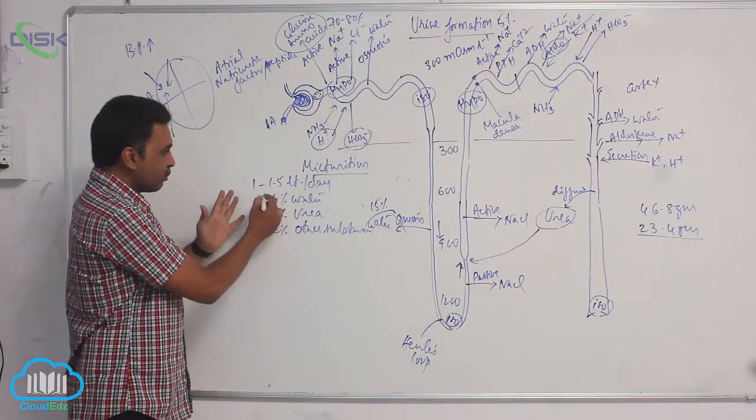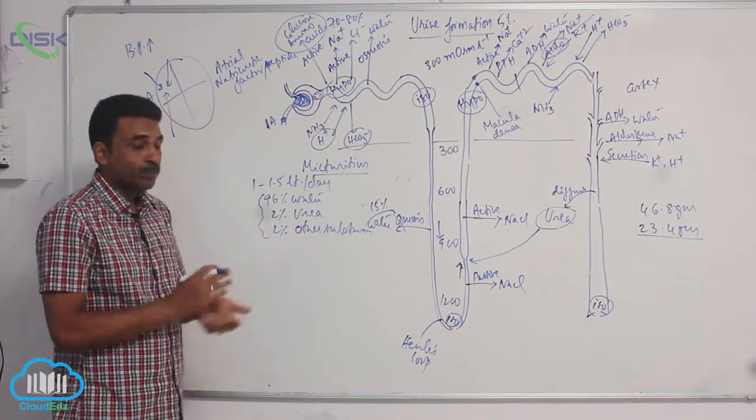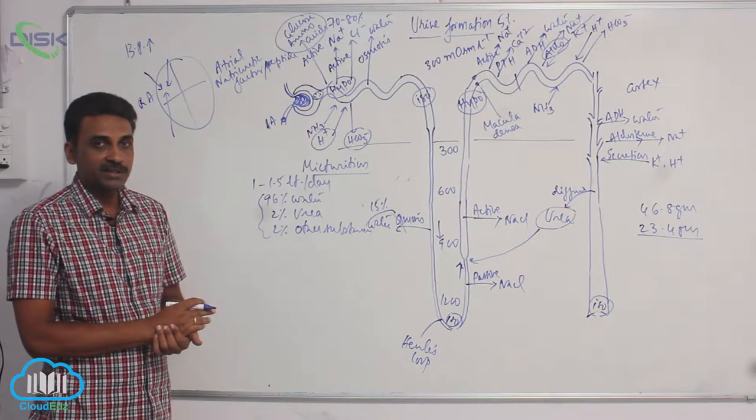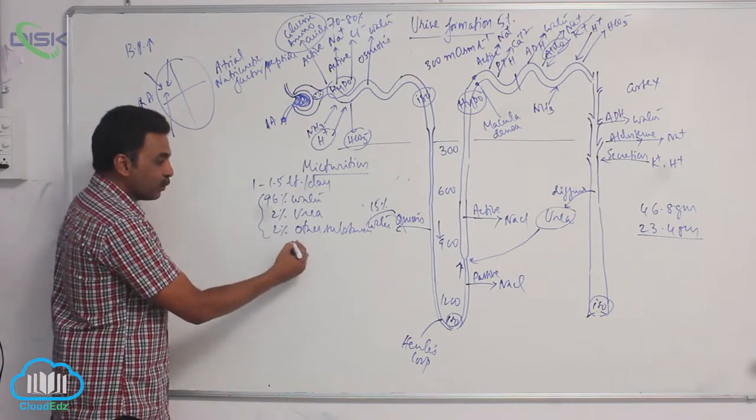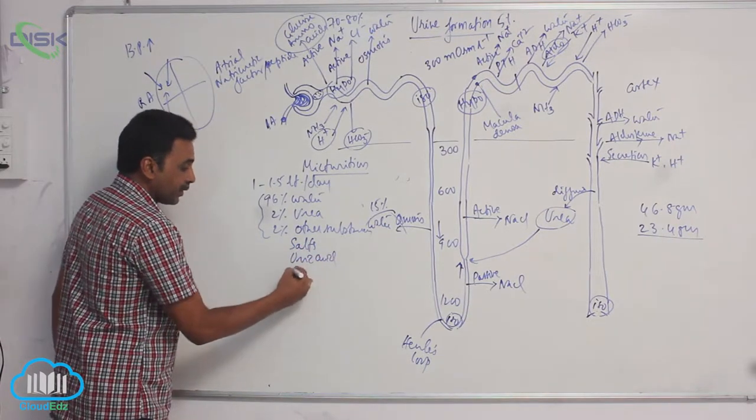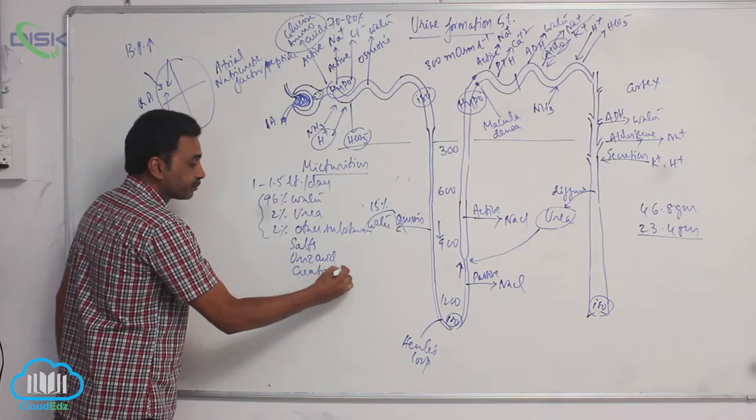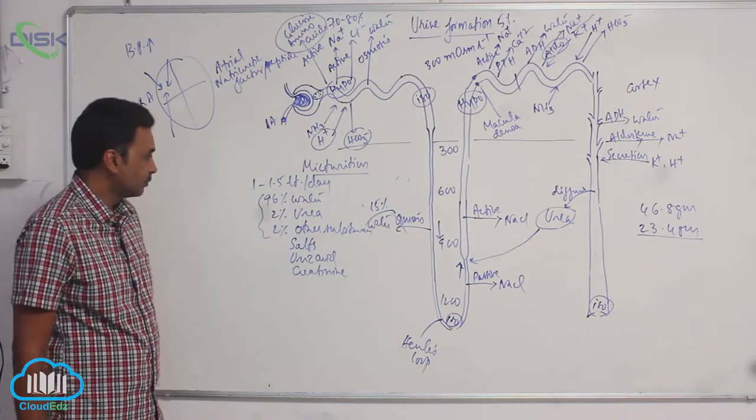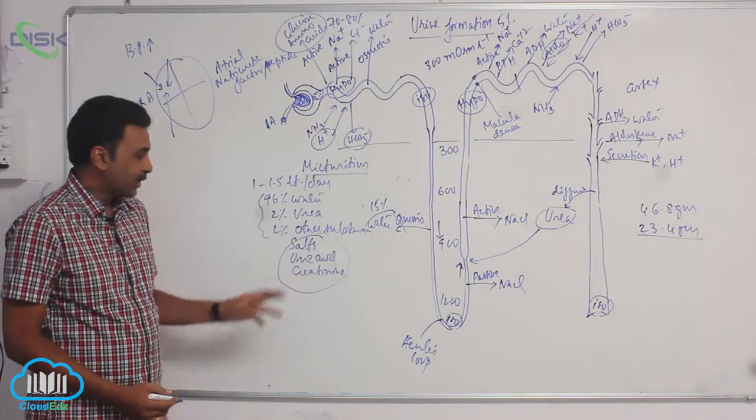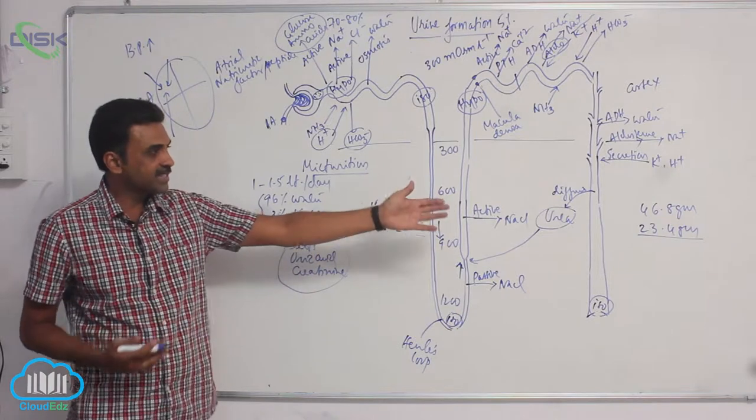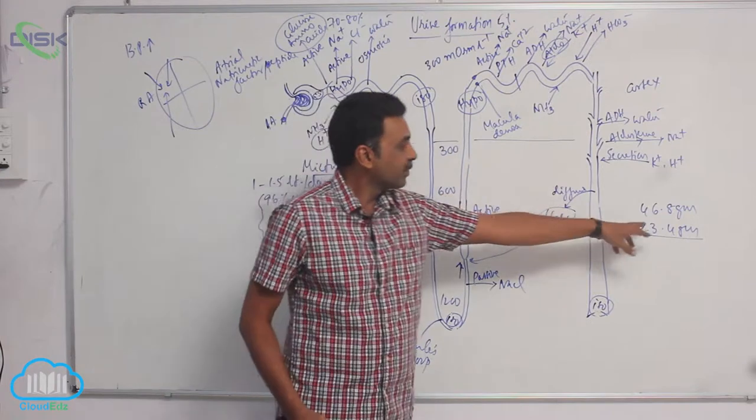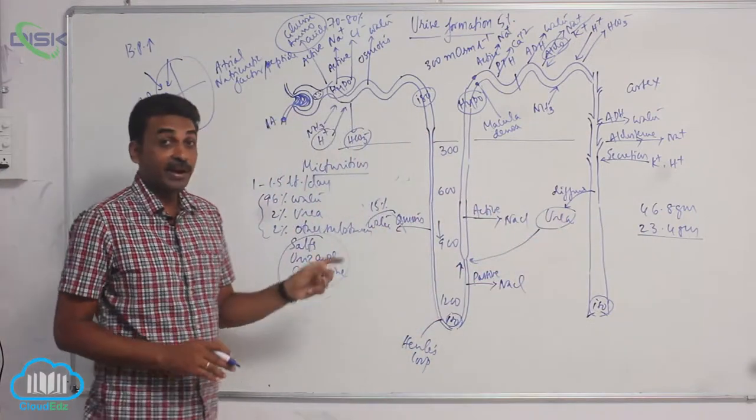Now, if you see the composition, still 96 percent is water, 2 percent is urea. All other substances make up only 2 percent. The remaining 2 percent includes salts, uric acid, creatinine. Out of 46 and a half grams of urea which is filtered, half of that is excreted per day.